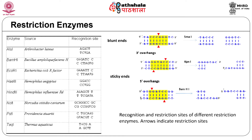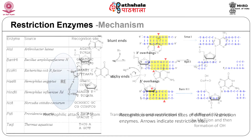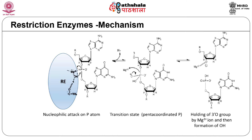Fragments with sticky ends are easier to join because of complementary base pairing that can occur between two DNA molecules having the same overhangs. Restriction enzymes bind to double-stranded DNA at the specific recognition sequence and cut the phosphodiester bond between two nucleotides on each strand. The mechanism involves a nucleophilic attack by OH on the phosphorus in the phosphodiester bond, making the phosphorus carry an extra negative charge in a transition state, which is then passed to a magnesium ion to stabilize, and finally to a proton to form OH.